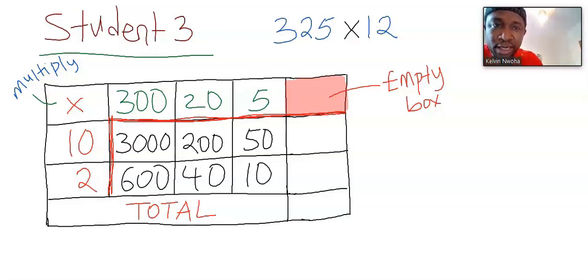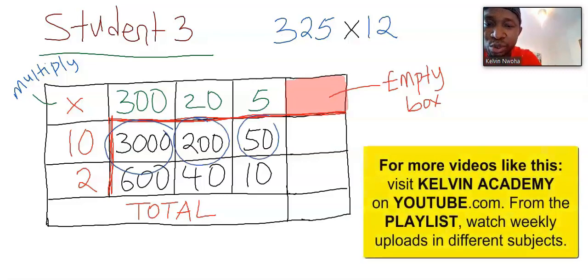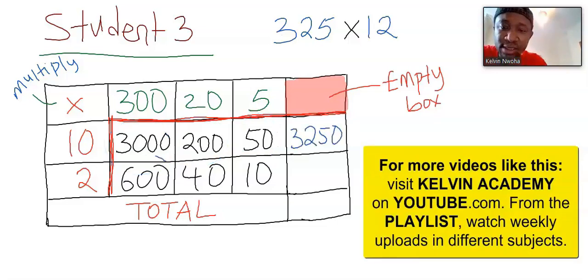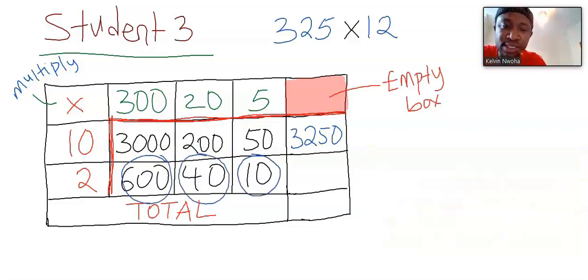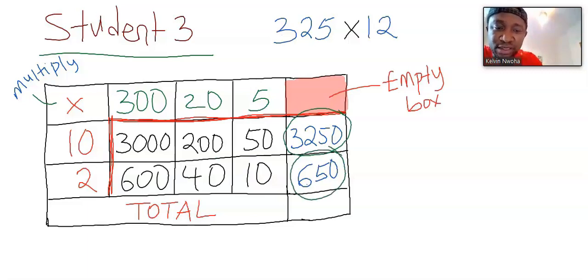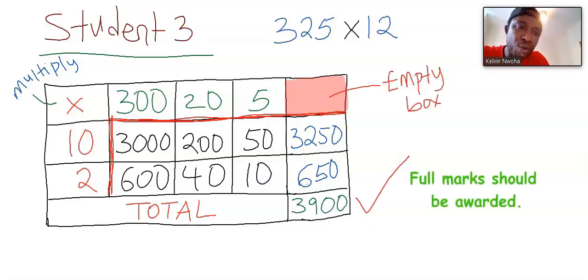Next, you add them in their rows. 3,000 plus 200 plus 50, and you got 3,250. Next, 600 plus 40 plus 10, and you got 650. Next, 3,250 plus 650. Student 3 got the answer and will be awarded the full mark.